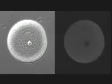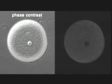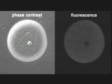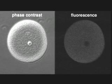A sea urchin egg during fertilization is visualized here simultaneously by phase contrast microscopy and by fluorescence microscopy. The egg contains a fluorescent dye that becomes brighter in the presence of calcium ions.